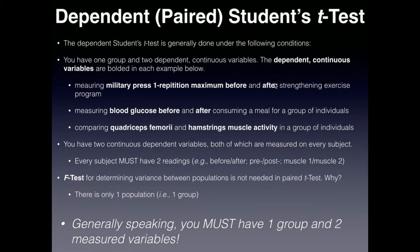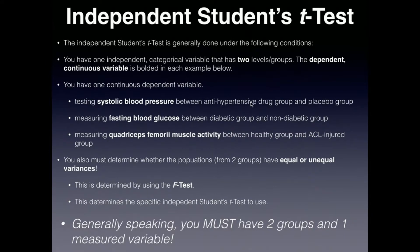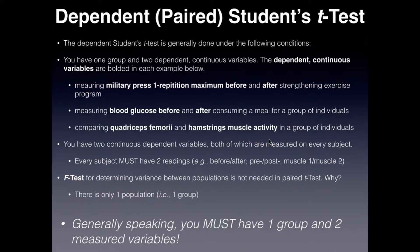Because you only have one group of individuals, every measurement is done on the same population — just the people in that group. You don't have two different groups. Unlike the independent case where you could have a diabetic and a non-diabetic group, in the paired test you only have one group. So there can't be any variation between groups. Therefore, the F-test used in the independent t-test is not necessary — it's irrelevant in a paired t-test. There is only one paired t-test. You just pick the only dependent t-test in Excel and run it, with no F-test required.